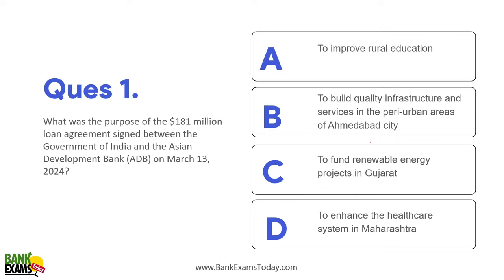So what kind of questions will you see in the exam? For example: 'What was the purpose of the 181 million dollar loan agreement signed between Government of India and Asian Development Bank on 13th March 2024 to build quality infrastructure services in peri-urban areas of Ahmedabad?' Exactly these types of questions will appear in the paper.